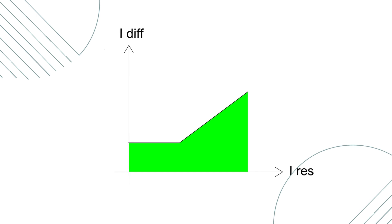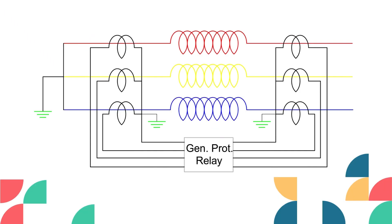This is the concept of biased and percentage differential protection. If we plot the restraining current and differential current, the green zone will be the safe zone. For any value of restraining current and differential current within this zone, the differential relay will not operate. But outside this zone, the relay will sense a fault in the stator winding and close the trip contact. We can change the slope by changing the turns of the restraining coil. That's the story of the electromechanical relay.